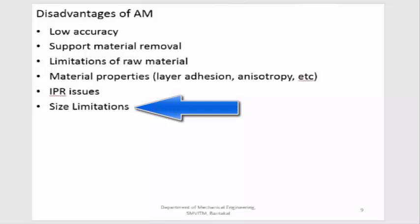The next disadvantage is size limitations. A few years back, there were significant issues with the size of components that could be manufactured using additive manufacturing — sizes were very small. But as of today, components of around two meters by two meters by one meter in height can be produced, so size restrictions are improving. However, some machines are still not able to produce very large components, so this remains a consideration for certain applications.